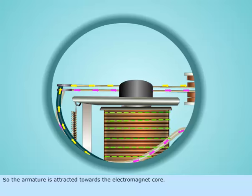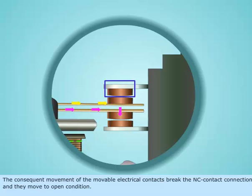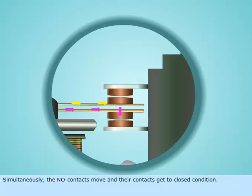The consequent movement of the movable electrical contacts break the NC contact connection and they move to open condition. Simultaneously, the NO contacts move and their contacts get to closed condition.